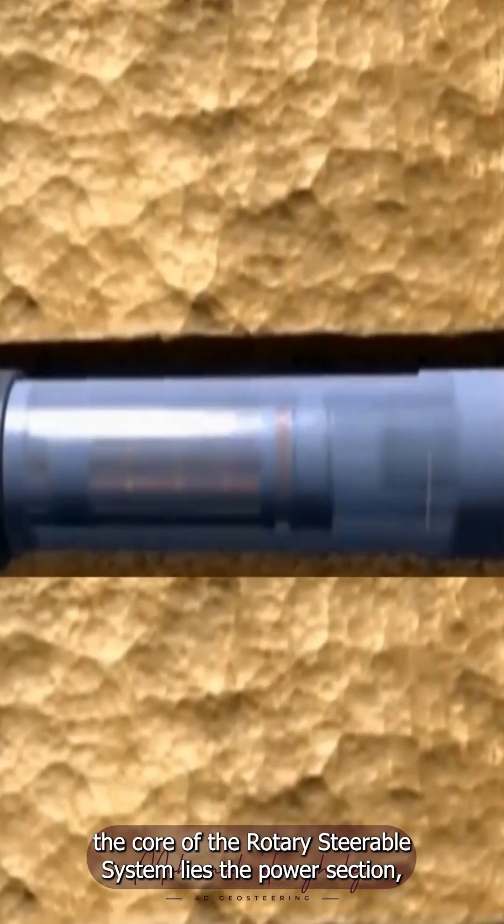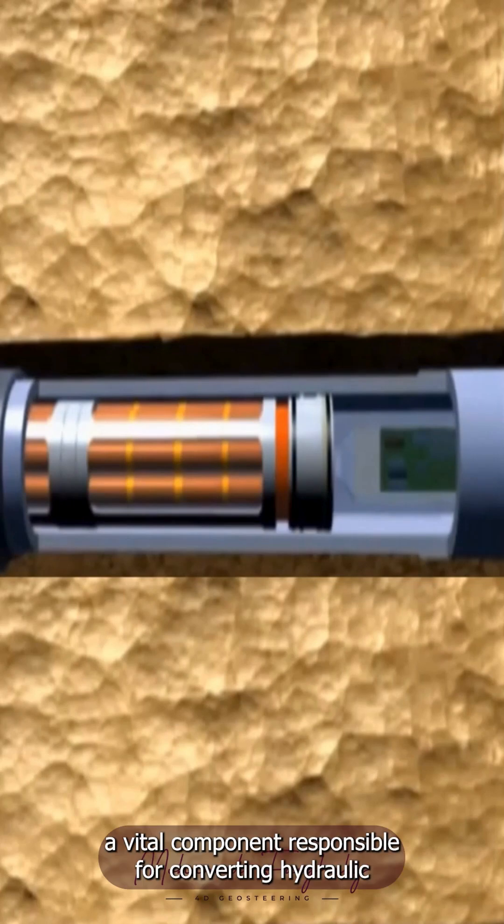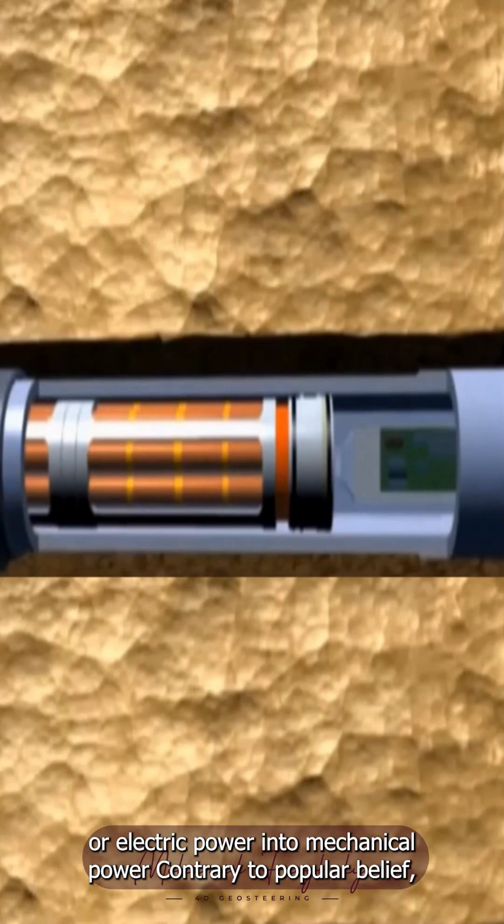At the core of the Rotary Steerable System lies the power section, a vital component responsible for converting hydraulic or electric power into mechanical power.